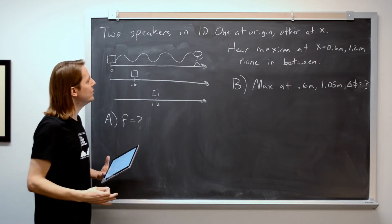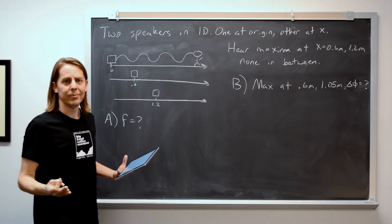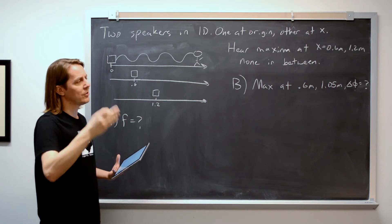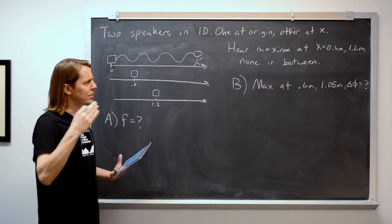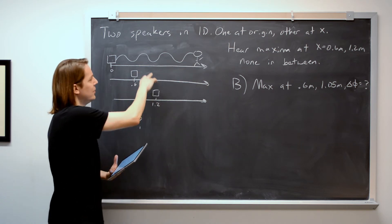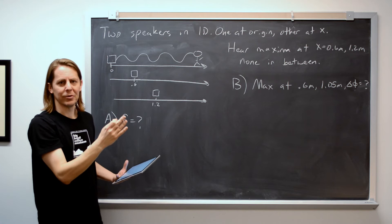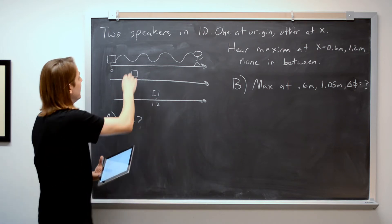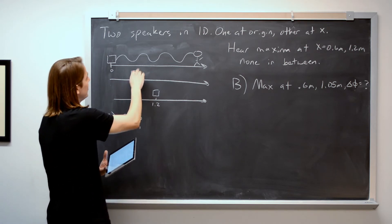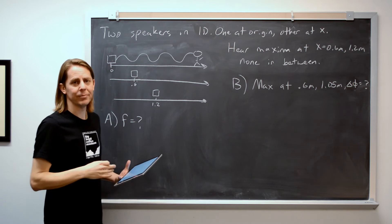What must be the frequency? So it's an interference problem, and you have to realize that when you hear a maximum in your ear here, it's because these are undergoing constructive interference. They're in phase, basically. The maxima from this sinusoid overlap the maxima from this sinusoid. That's really what it is.